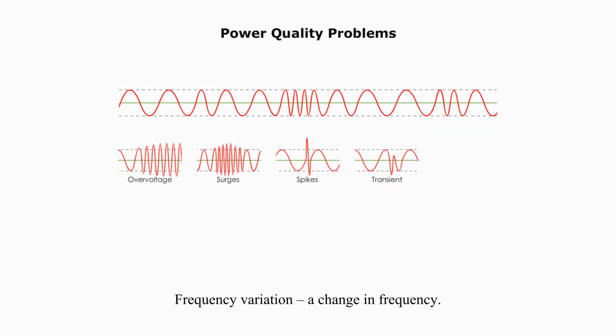The frequency variation is a change in frequency. The voltage involves wavelengths. The longer the wavelength, the lower frequency. The shorter the wavelength, the higher frequency. The U.S. electrical grid operates at 60 Hz or 60 cycles per second. Anything but 60 Hz is considered frequency variation.